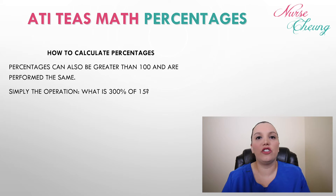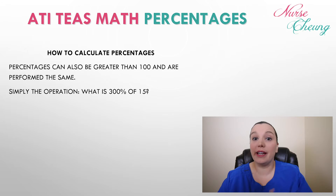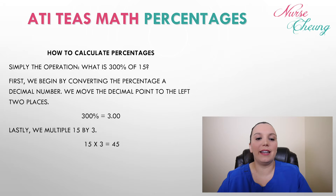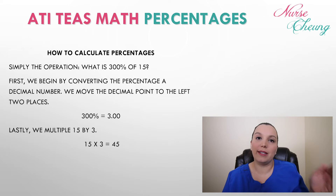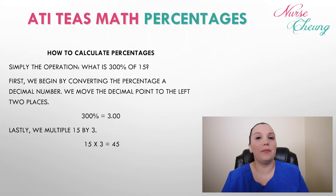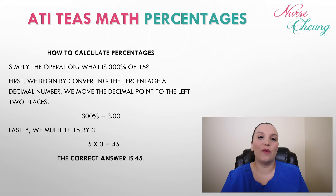Most percentages are based on 100%, but there are percentages greater than 100 that are performed exactly the same way. For example, what is 300% of 15? First, we convert the percentage to a decimal — moving the decimal twice to the left gives us 3. So 300% is equal to 3.00. Lastly, we multiply 15 by 3, which equals 45. So 300% of 15 is 45.